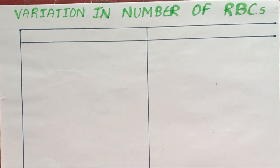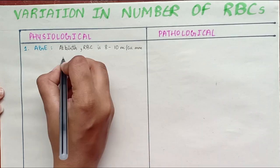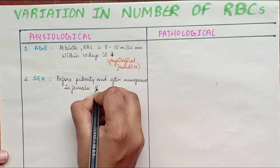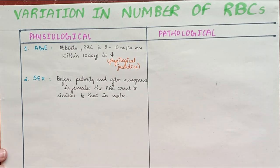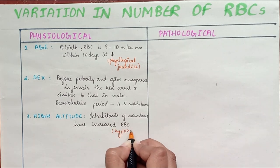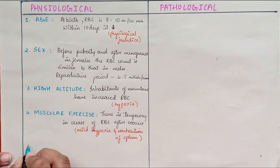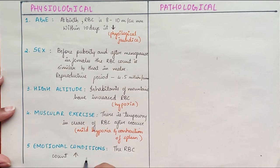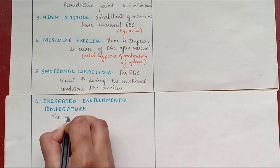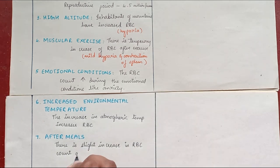Variation in the number of red blood cells — physiological changes: Age: at birth, RBC count is 8 to 10 million per cubic millimeter; within 10 days it decreases, which is known as physiological jaundice. Sex: before puberty and after menopause in females, RBC count is similar to males; in the reproductive period it is 4.5 million per cubic millimeter. High altitudes: inhabitants of mountains have a higher RBC count due to low oxygen. Muscular exercise: there is a temporary increase in RBC count after exercise. Emotional conditions: RBC count increases during emotions like anxiety. Increased environmental temperature also increases RBC count. After meals, there is a slight increase in RBC count.